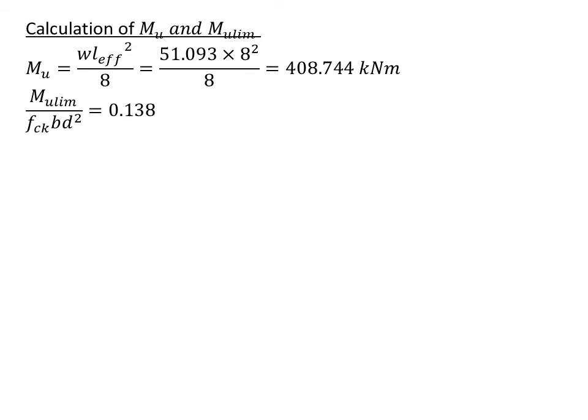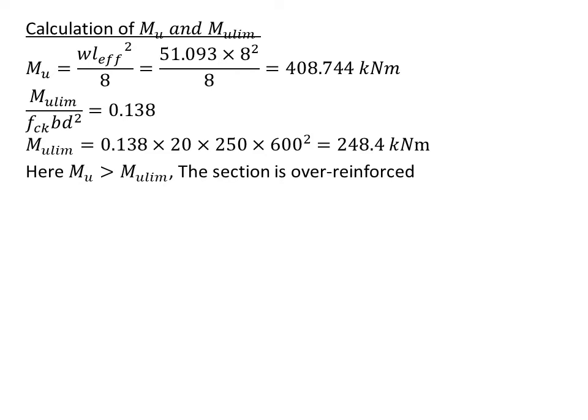After that we calculate Mu limit equals 0.138 × fck × b × d² for Fe415 steel, and we get Mu limit value of 248.4 kNm. Now when you see this, Mu is greater than Mu limit, so the section is over-reinforced. Usually in singly reinforced beams we increase the depth, but here the question mentions the depth is restricted to 650 mm. So we can't increase the depth.